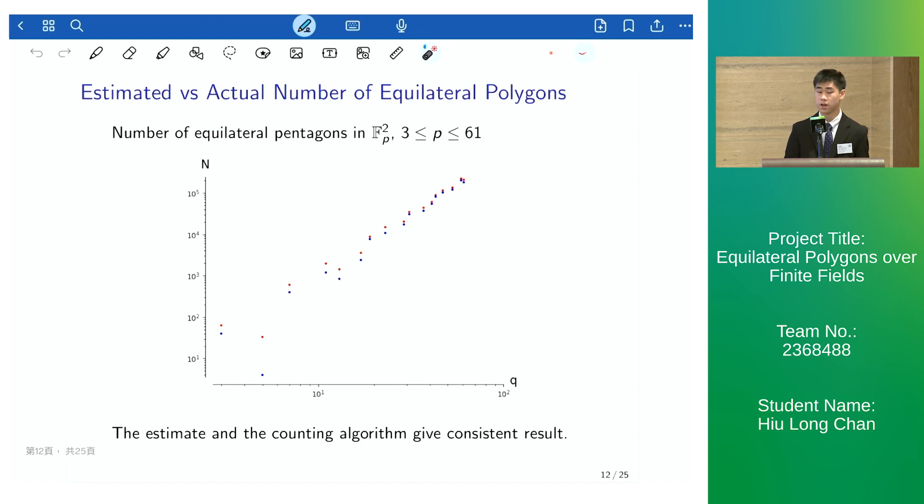Here we have the numerical figures, so we have the estimated number of polygons being the red points and the actual number being the blue points. And we see that the estimate and the counting algorithm give a consistent result because the ratio between the two seems to tend to 1 as p tends to infinity.